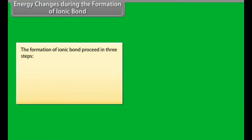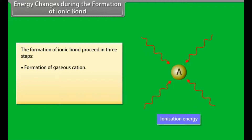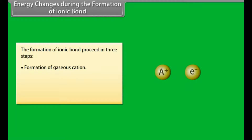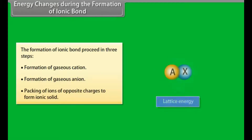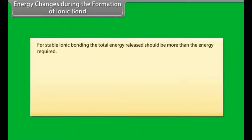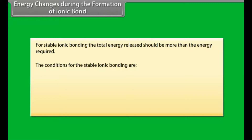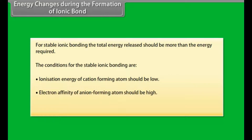Energy changes during the formation of ionic bond. The formation of ionic bond proceeds in three steps. Step 1: Formation of gaseous cation — the energy required is called ionization energy. Step 2: Formation of gaseous anion — the energy released is called electron affinity. Step 3: Packing of ions of opposite charges to form ionic solid — the energy released is called lattice energy. For stable ionic bonding, the total energy released should be more than the energy required. Conditions: ionization energy of the cation-forming atom should be low, electron affinity of the anion-forming atom should be high, and lattice energy should be high.